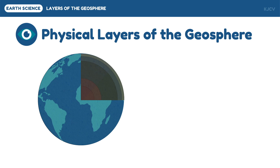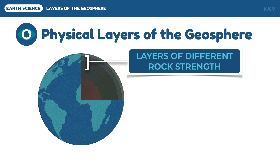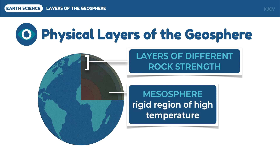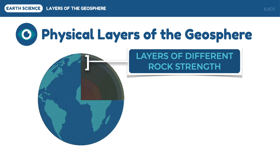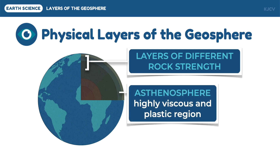The layers above the core are made up of rocks, as discussed in the chemical layers; however, these rocks have different strengths. The layer above the outer core is the mesosphere, known for its relatively high strength even though it experiences high temperatures due to contact with the outer core. This layer is also the largest layer of the mantle.